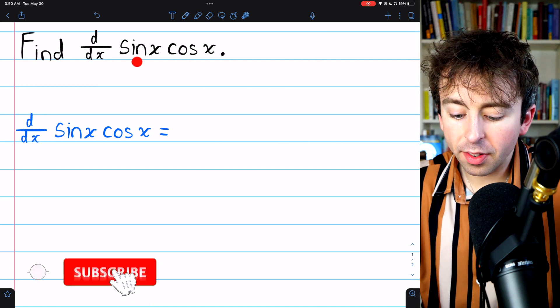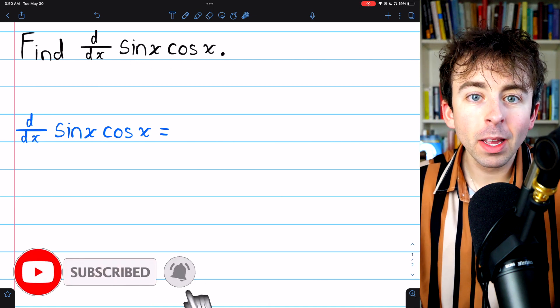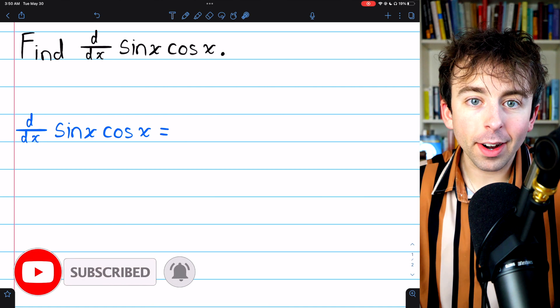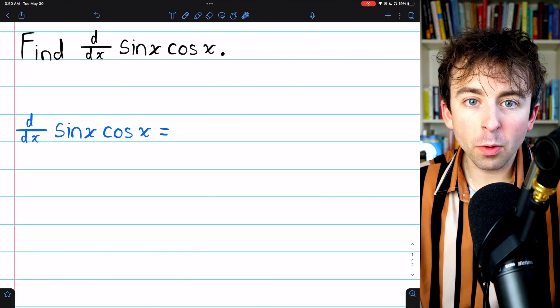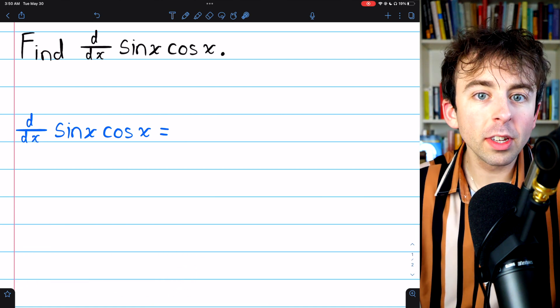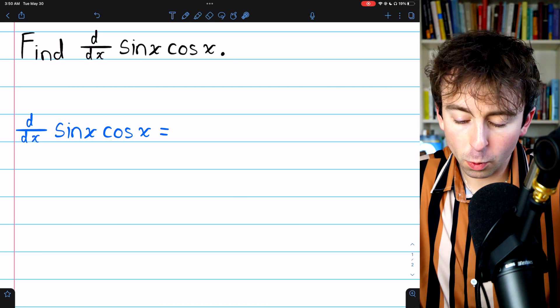Let's find the derivative of sine times cosine. Notice this is a product of functions. So rather than just our basic derivative rules, we're going to need the product rule.